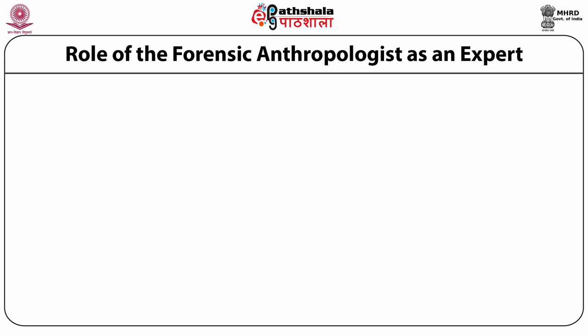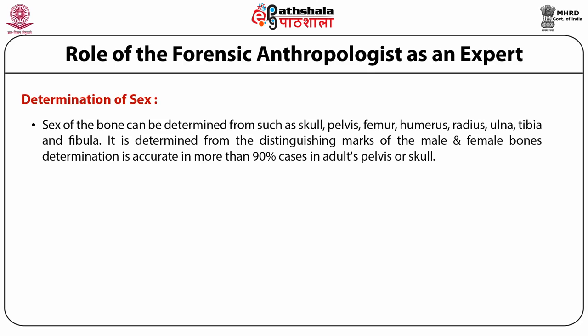Now we will study the various fields in which forensic anthropologists play an important role in criminal investigation as forensic experts. The first field is determination of sex. The sex of a bone can be determined from the skull, pelvis, femur, humerus, radius, ulna, tibia, and fibula based on distinguishing marks of male and female bones. Determination is accurate in more than 90% of cases using adults' pelvis or skull. Certain measurements of the humerus, radius, ulna, femur, tibia, and fibula are also helpful.